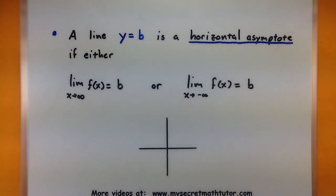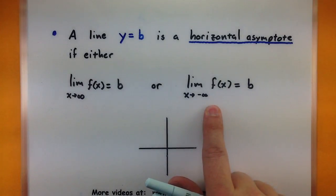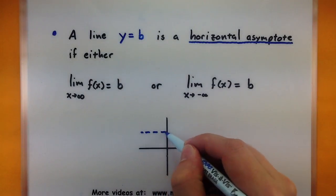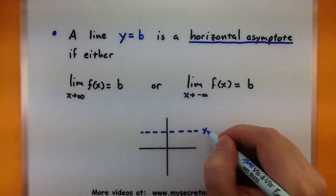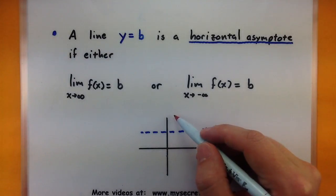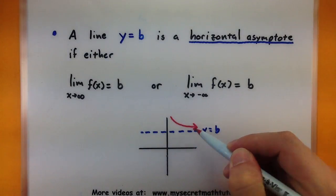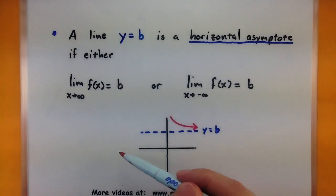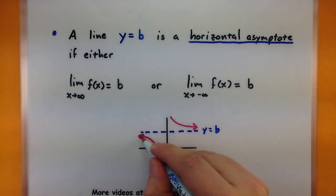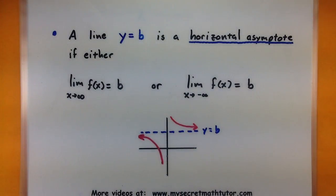Now if we use the other limit involving infinity, we can get a horizontal asymptote. A line y equals B is a horizontal asymptote if either the limit as x approaches infinity equals B, or the limit as x approaches negative infinity is equal to B. Imagine a horizontal line located right at y equals B. Our function's x's are approaching infinity, going out in that direction, and the function wants to get really close to B. Or possibly our x's are going in the negative direction and our function wants to approach B as well.